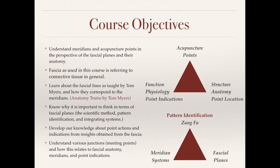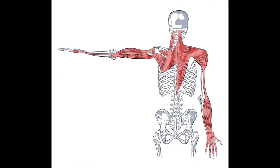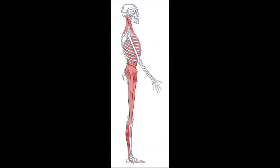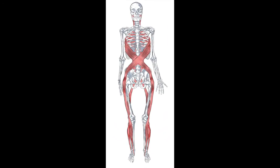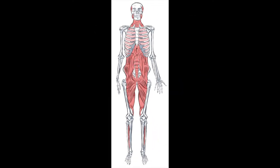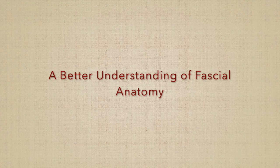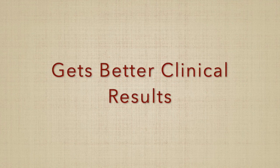The first course objective reads: understand meridians and acupuncture points in the perspective of the fascial planes and their anatomy. These fascial planes are essentially forming an anatomical basis for the meridians, and understanding this can lend us great insights into how acupuncture works as well as how to make better point selections for our clients.